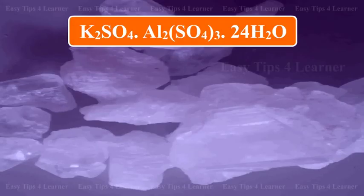What is potash alum? Potash alum is K2SO4·Al2(SO4)3·24H2O.